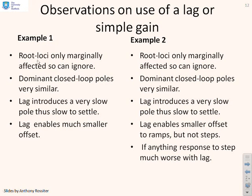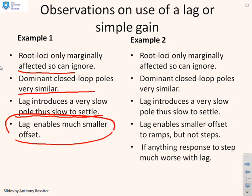All right. So with example one, the root loci only marginally affected. That's in the key part that you're interested in. So that was good. The dominant closed loop poles were very similar with the lag and without the lag. The lag did introduce a very slow pole, so it was slow to settle. But critically, the lag enabled you to get a much smaller offset. And so you accept this slow mode as a price you have to pay to get the much smaller offset.